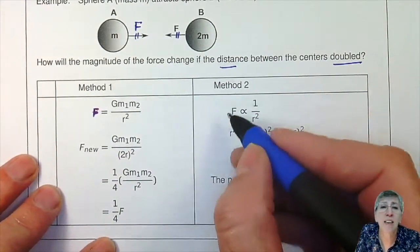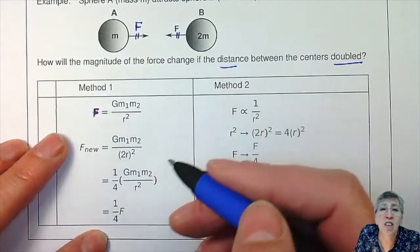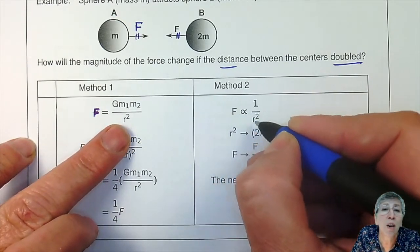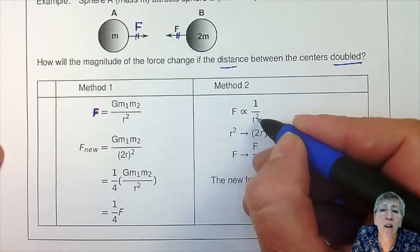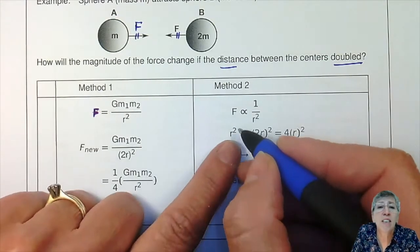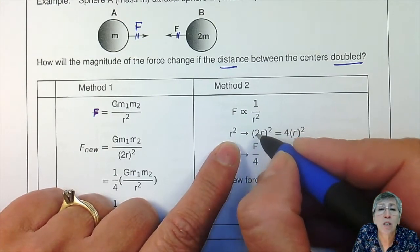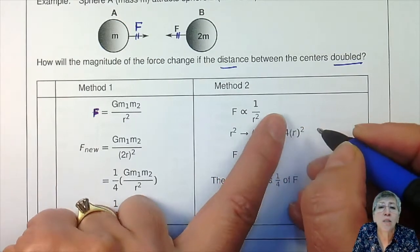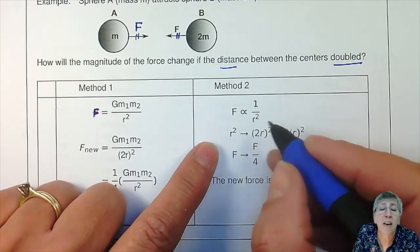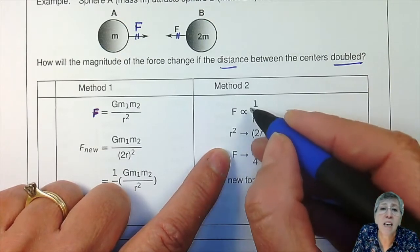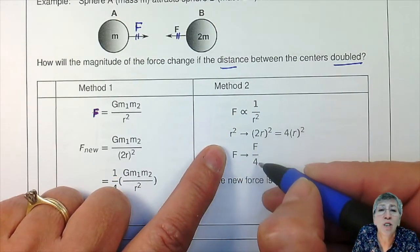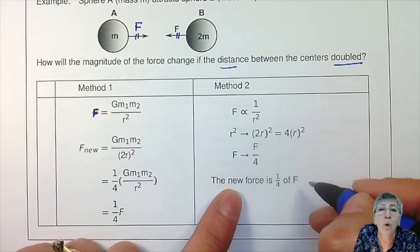The second method: leave out everything that is staying constant, and that will show you the relationship between F and R. F is directly proportional to 1 over R squared — inversely proportional to R squared. So if R is replaced by 2R, R squared becomes 4R squared — a factor of 4. Since F is inversely proportional to R squared, if R squared increased by a factor of 4, F decreases by a factor of 4. The new force is one quarter of the old force.